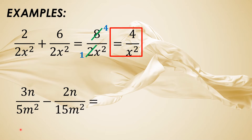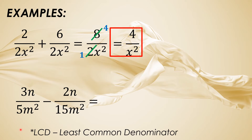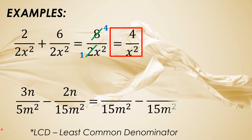Another example: 3n over 5n squared minus 2n over 15n squared. So magkaiba sila ng denominator, so let us find the LCD or least common denominator. Since 5 and 15 have the common factor, the LCD is 15. So let us use that number and copy the variable with an exponent of 2. The LCD is 15n squared. So 15n squared will be divided by 5n squared — 15n squared divided by 5n squared is 3.